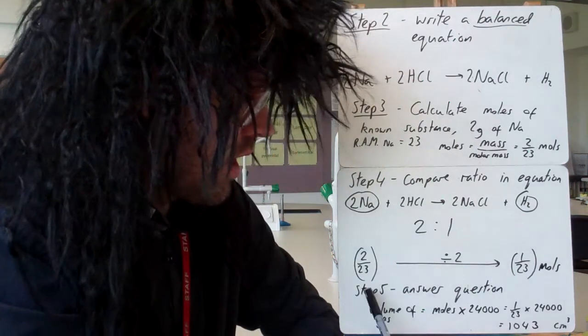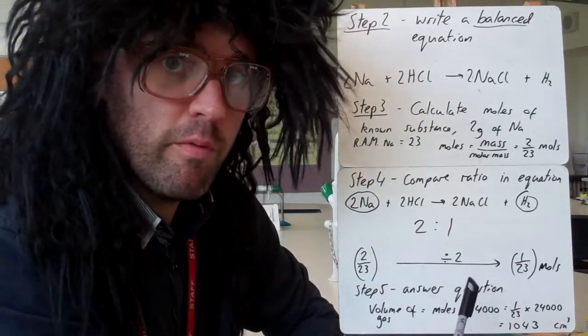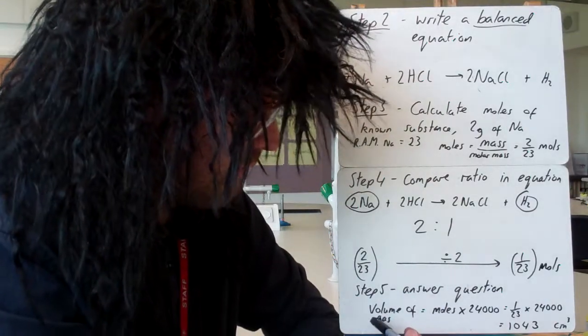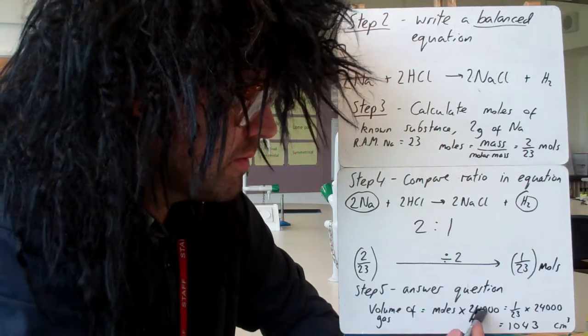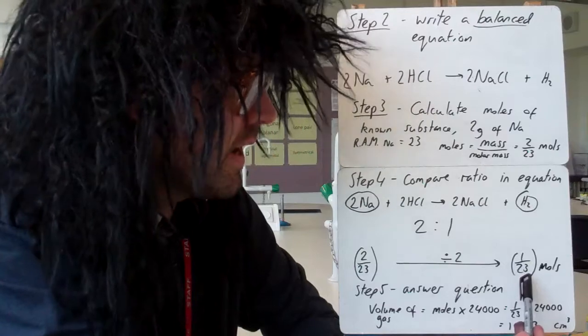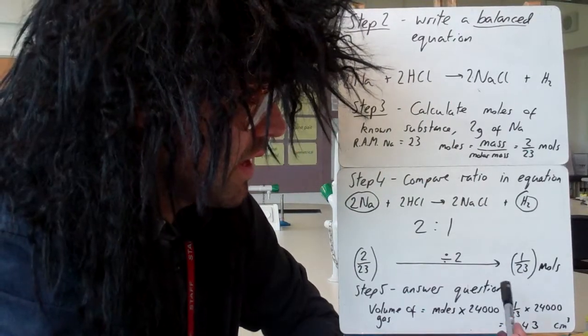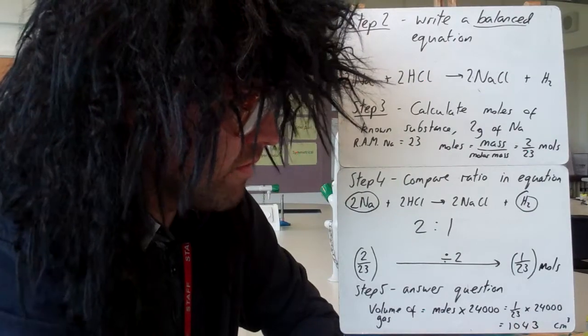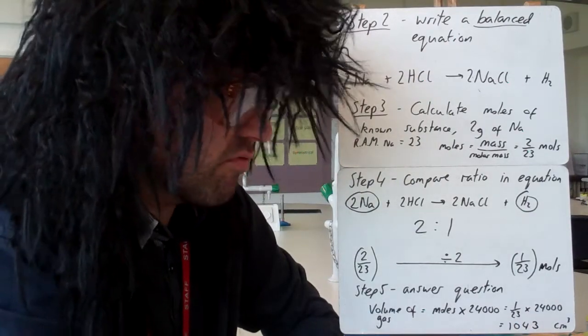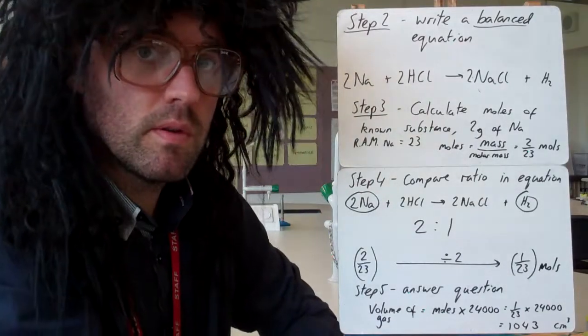Step five: answer the question. The question was asking us what volume of hydrogen gas would be produced. Volume of gas equals moles times 24,000. So the moles of hydrogen gas is 1 over 23, times that by 24,000, and that gives me 1,043 centimeters cubed, written to four significant figures.